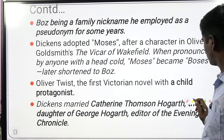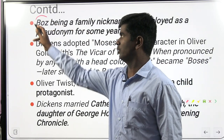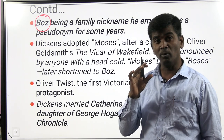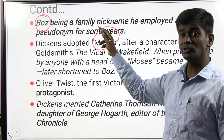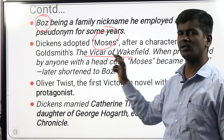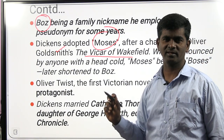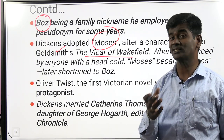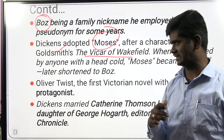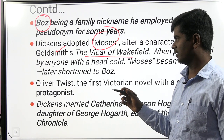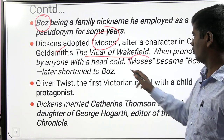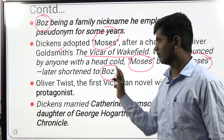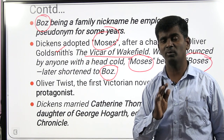His pen name was 'Boz.' This name comes from 'Moses' — a character used in the novel Vicar of Wakefield composed by Oliver Goldsmith. This character's name was used as a pen name for a few years. Later, instead of 'Moses,' people said 'Boses,' and this became 'Boz.' So what is the pen name of Charles Dickens? Boz — this has featured several times in UGC NTA examinations.